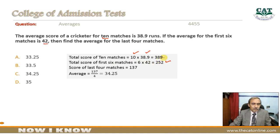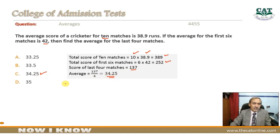Subtract the six-match score from the ten-match total: 389 minus 252 = 137. This 137 is the total score for the last four matches. Dividing by 4 gives the average: 137 ÷ 4 = 34.25, which is option C. So the answer to this question is option C.